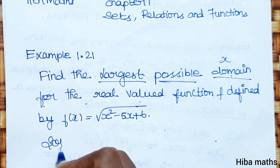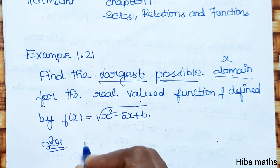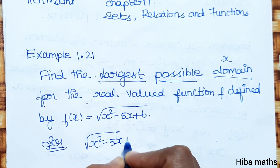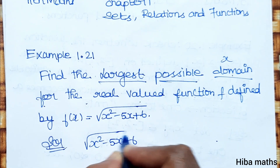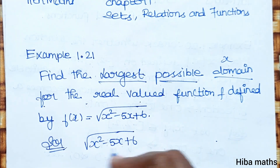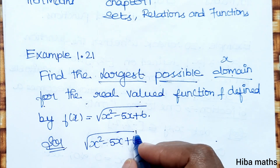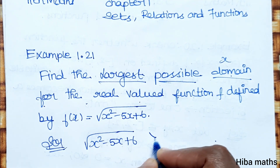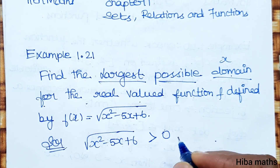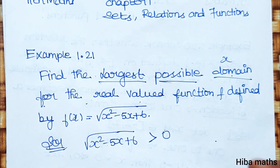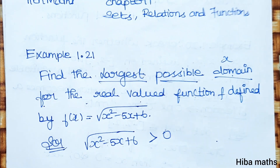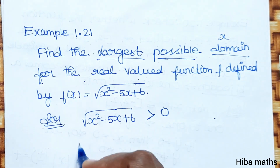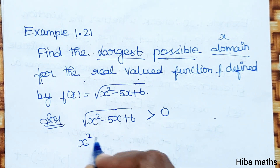So here we get into the solution. The function is root of x squared minus 5x plus 6. For the square root function, the expression inside must be greater than or equal to zero, because if it is negative, the root will not be real. So I will solve it.